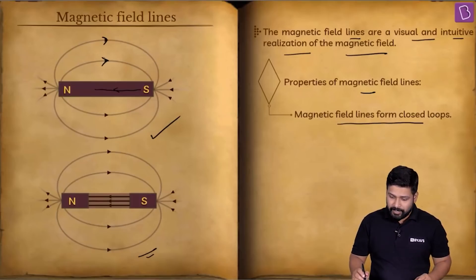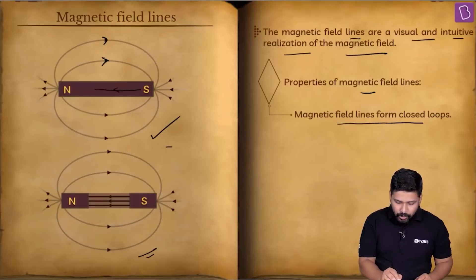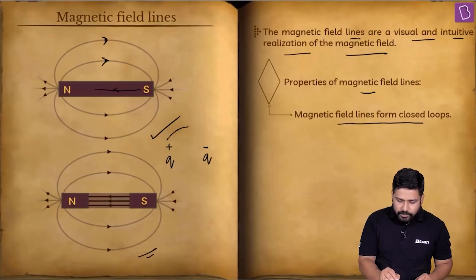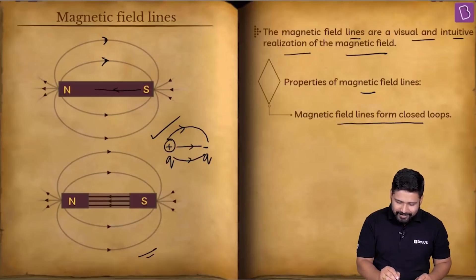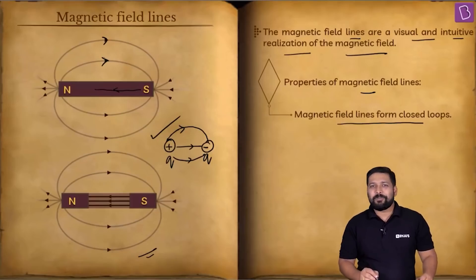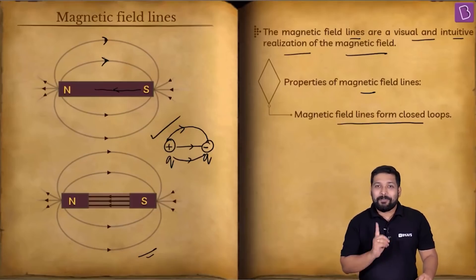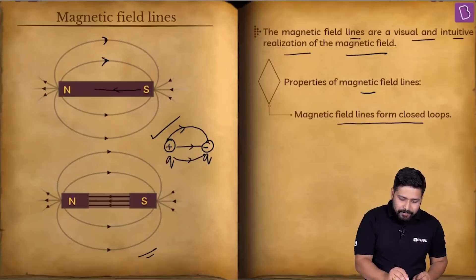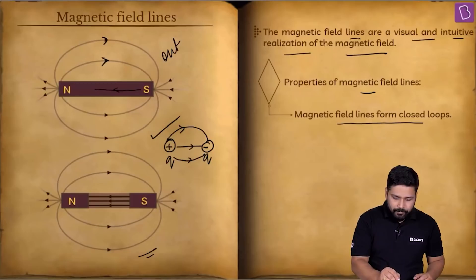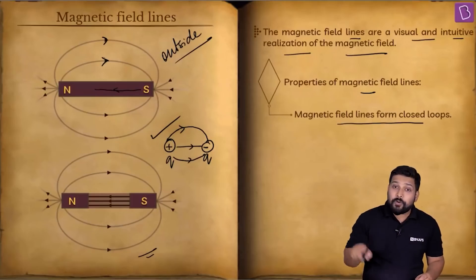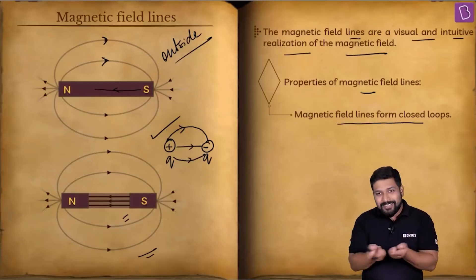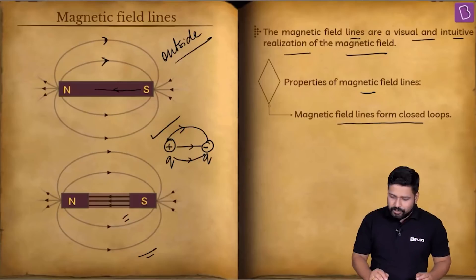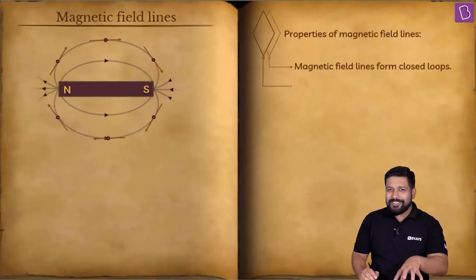Electric field lines did not form a closed loop. If I draw a +q charge and a −q charge, the field lines started from +q and sinked into −q — it was never going the other way around. But for a magnet, the lines go from north to south outside, and south to north inside, forming closed curves — closed loops.